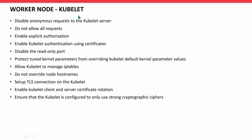Worker node kubelet recommendations: disable anonymous requests to the kubelet server, do not allow all requests, and enable explicit authorization. Enable kubelet authentication using certificates. Disable the read-only port. Protect tuned kernel parameters from overriding kubelet default kernel parameter values. Allow kubelet to manage IP tables. Do not override node hostnames. Set up a TLS connection on the kubelet. Enable kubelet client and server certificate rotation. Ensure the kubelet is configured to use only strong cryptographic ciphers.